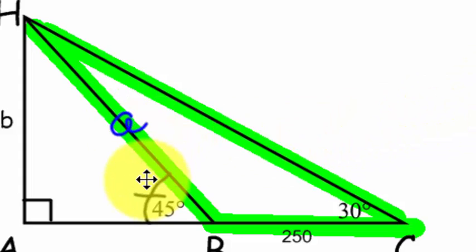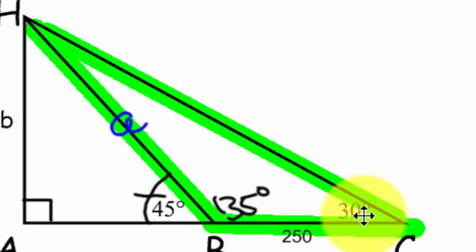Well, I know that these two angles here have to add up to 180. So if this is 45 degrees, then I know this angle here is 135 degrees, right? And if this is 135 degrees and this is 30 degrees, then I know this angle here has to be 15 degrees.